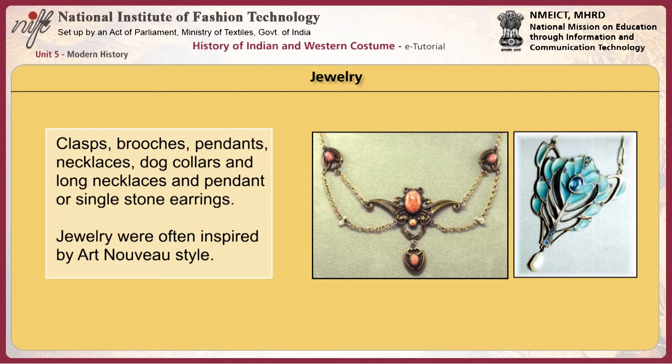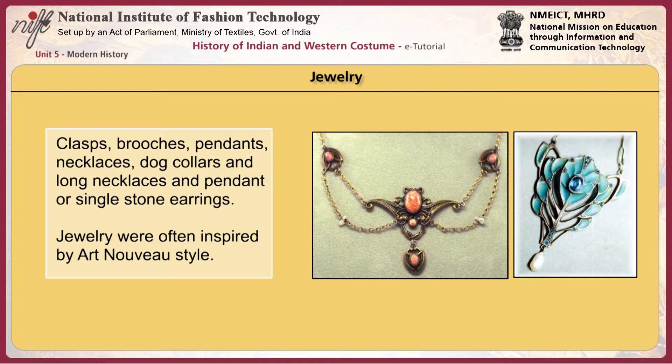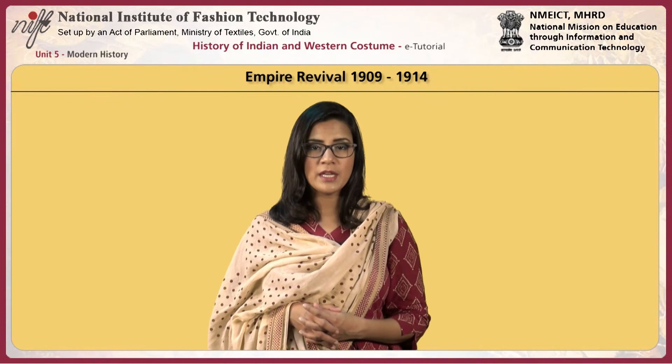Jewellery was often inspired by Art Nouveau style. Clasps, brooches, pendants, necklaces, dog collars, and long necklaces with pendants or single stone earrings were the main jewellery worn. Underwear included brassiere, straight corset, knickers, and a chemise, comparatively lesser in quantity than other periods.